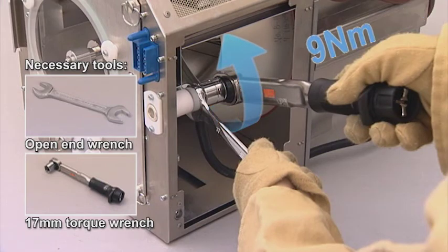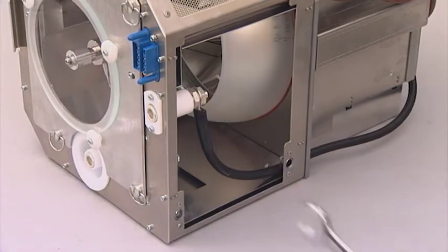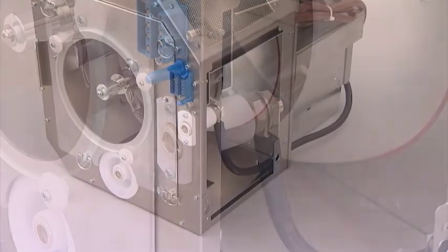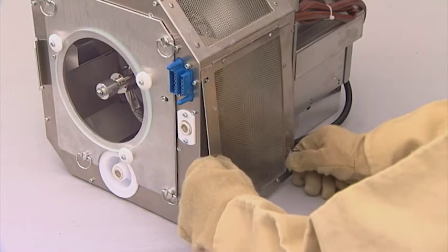Tighten the nuts to 9 Nm. Check that there is no looseness in the connection. Reinstall the side cover of the lamp house.